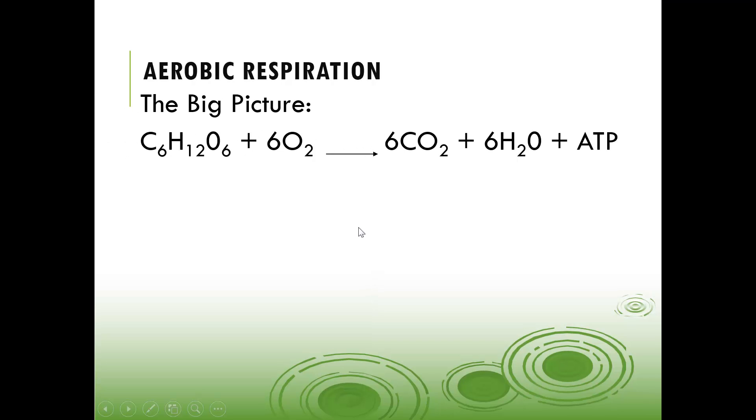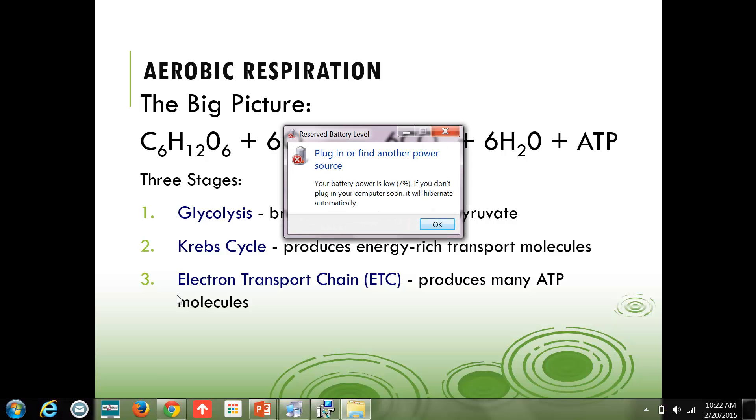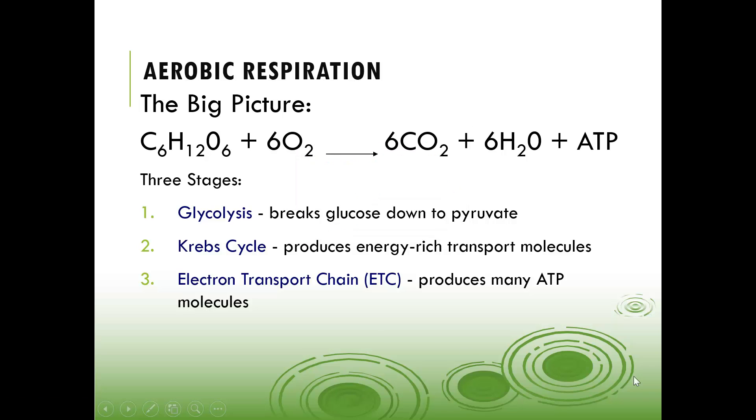Let's talk about aerobic respiration. The big picture is that we have glucose with oxygen. Oxygen makes it aerobic. Our end products, our waste, is carbon dioxide which we exhale, water, and ATP. There are three stages: you have glycolysis, the Krebs cycle, and the electron transport chain. In glycolysis, that is going to be on page 70 in your book, it breaks that glucose down into the pyruvate. Then we move into the Krebs cycle. The Krebs cycle produces that energy-rich transport molecules. And finally, we have our electron transport chain that produces the many ATP.